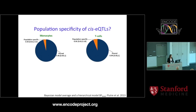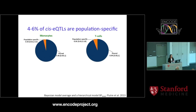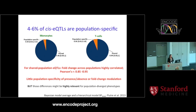We can ask about population specificity of the cis-eQTLs across our three ancestry groups. We see that only about 4 to 6% of the cis-eQTLs are population-specific. Most of these are driven by allele frequency differences, but some have identical allele frequencies yet the association is present in one population and absent in another. For the shared associations, effect sizes are very highly correlated across populations, so there isn't much evidence for effect size differences across populations.